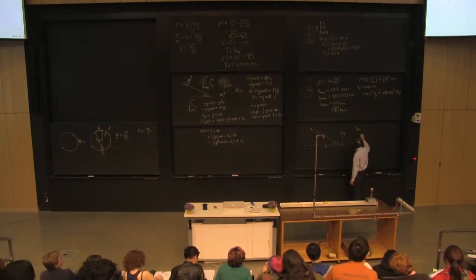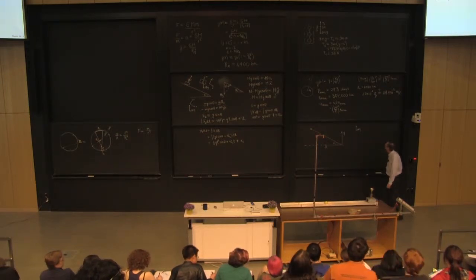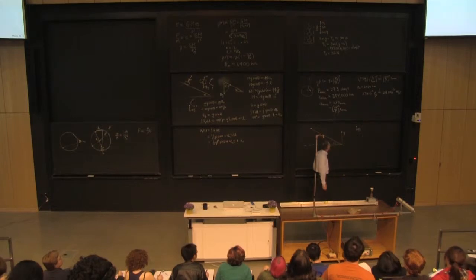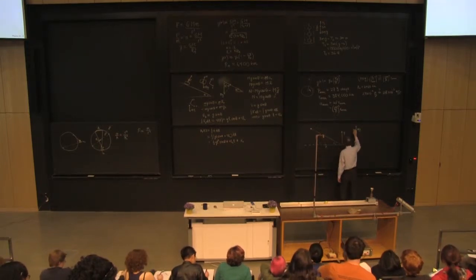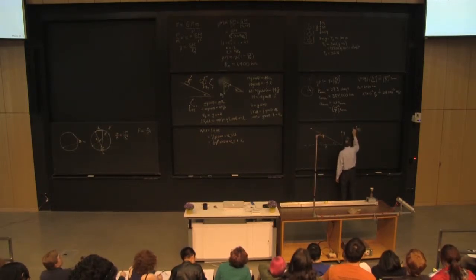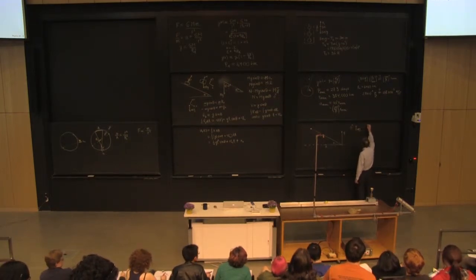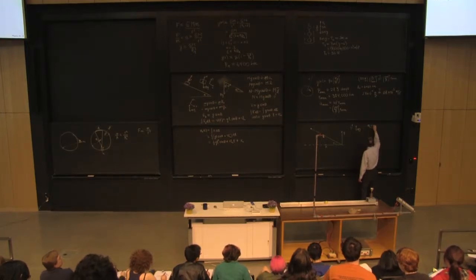mg down, or m broccoli, mbg. And we'll take that's in the negative y direction. So y is positive this way. And so the equation of motion I get is minus m broccoli g is equal to m broccoli y double dot.